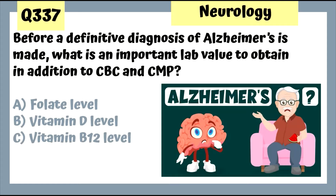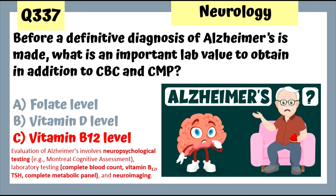Question 336: A heavy chronic alcoholic with wide-based gait needing a walker to ambulate but intact cognition — the defect is in the Purkinje fibers of the cerebellum, leading to these problems in chronic alcoholics. Question 337: Before definitive diagnosis of Alzheimer's is made, check vitamin B12 levels along with CBC and TSH to rule out treatable causes of neuropsychological problems.